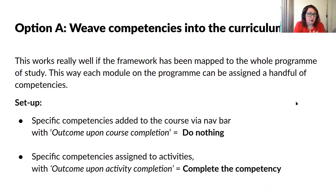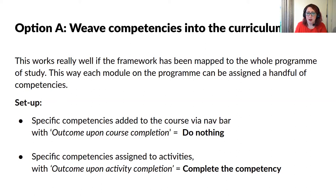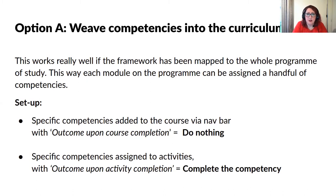Option A is weaving these competencies into the curriculum. This works really well if you've had a curriculum meeting where you've looked at the framework and mapped it across all the modules in the programme — saying, these two competencies work really well with this assessed task, or these ones here work with this live brief. When you set it up, you add the competencies to the course with the outcome set to do nothing. Then you assign these competencies to any activities the students complete, and if you're using completion tracking, you can set the competency to be deemed complete once the activity is complete.